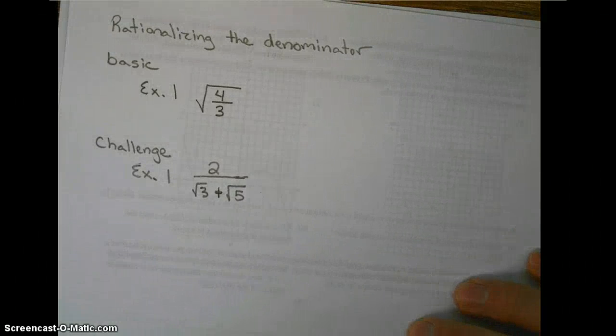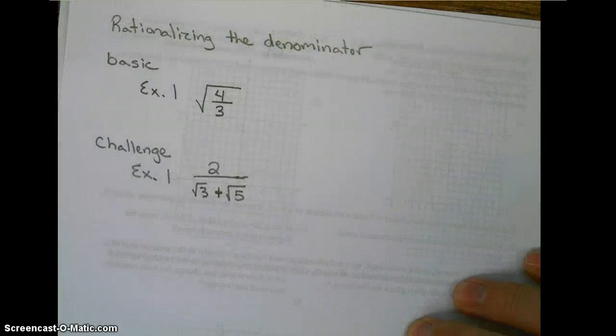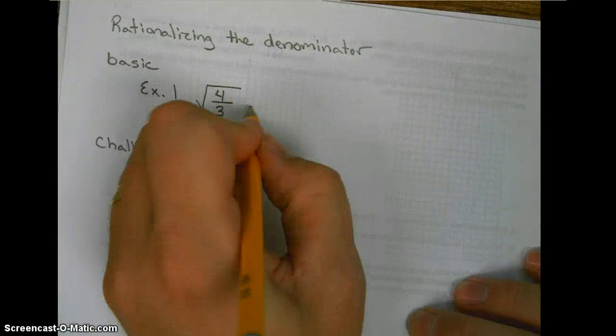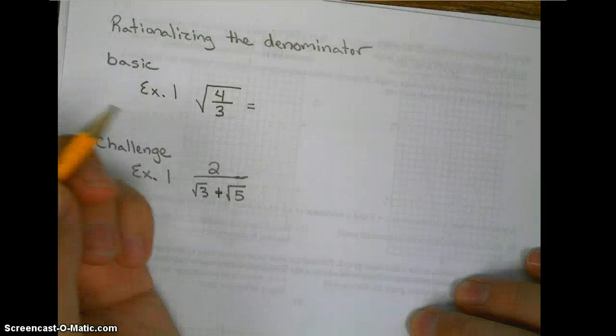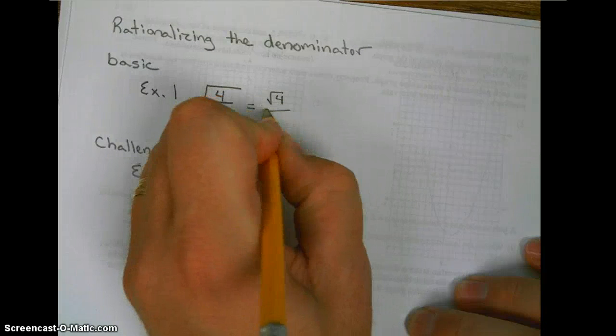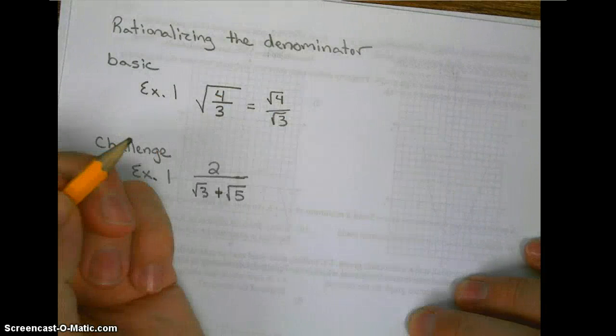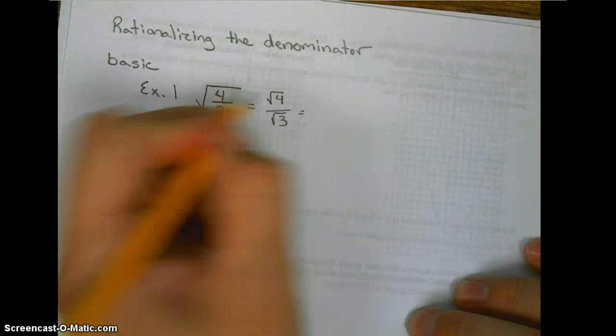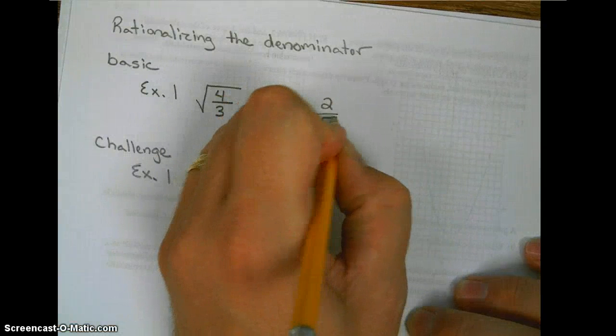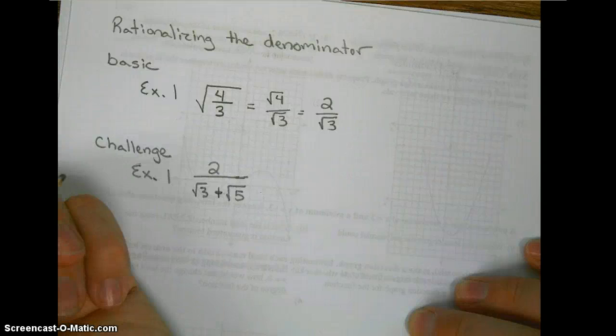Enrichment video on rationalizing the denominator. Basic problem, example 1: splitting the fraction into two pieces, we get the square root of 4 over the square root of 3. Simplifying, we get 2 over the square root of 3.